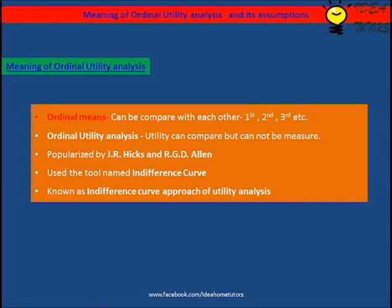Ordinal Utility Analysis implies that utility can be compared but cannot be measured. It was popularized by J.R. Hicks and R.G.D. Allen, who used the tool named Indifference Curve. That is why it is also known as the Indifference Curve approach of Utility Analysis.